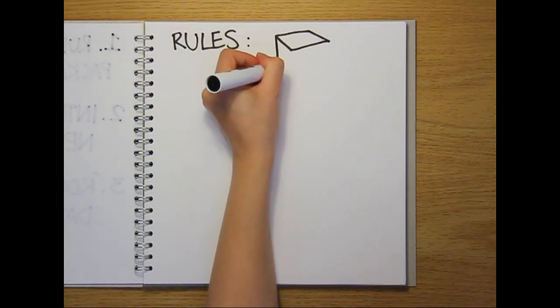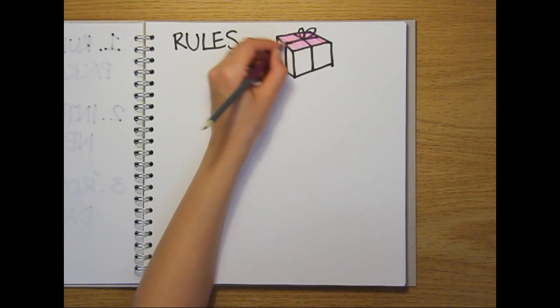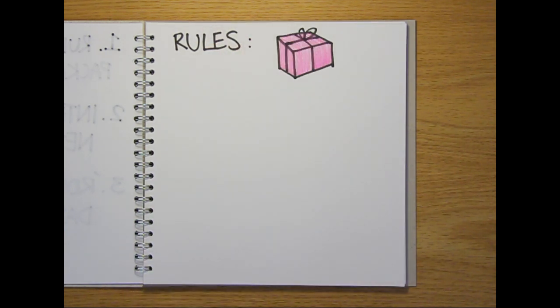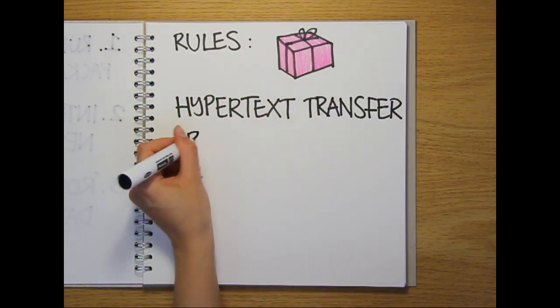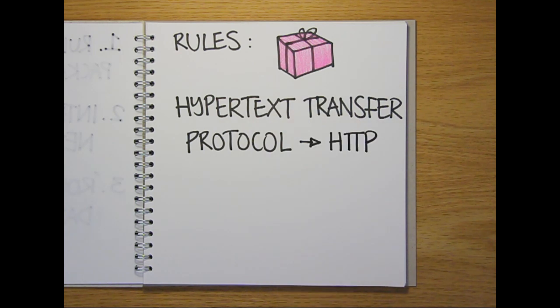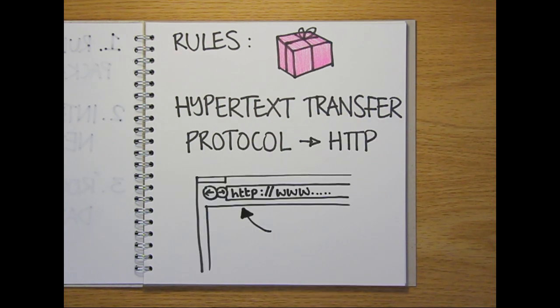The set of rules that the majority of us use for packaging and moving data around the globe using the World Wide Web is the Hypertext Transfer Protocol, or HTTP, which you usually see at the start of a web address, although there are many others.